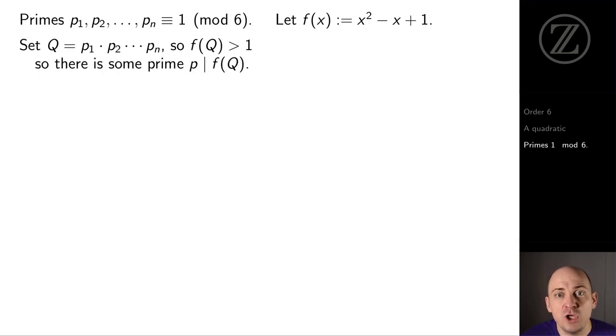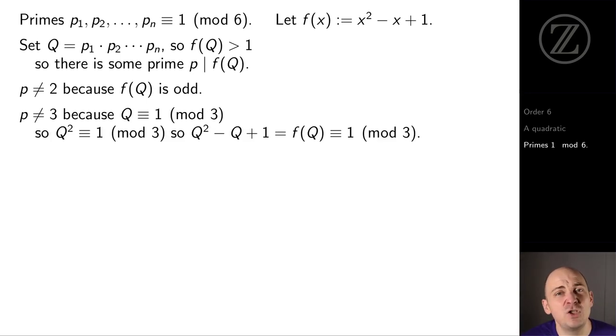We're going to use this polynomial f to help us out, and we'll compute f of Q, where Q is p1 times p2 times da-da-da times pn. Note that f of Q is bigger than 1, so there's some prime p that divides f of Q. That prime p can't be 2 because f of Q is odd. And that prime p can't be 3 because Q is 1 mod 3, so Q squared is also 1 mod 3, so Q squared minus Q plus 1 is 1 mod 3.